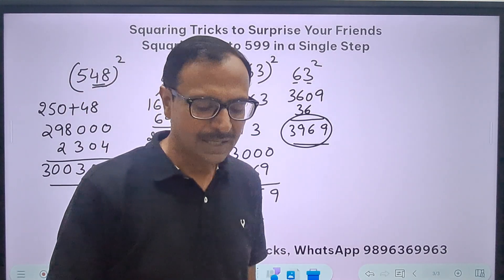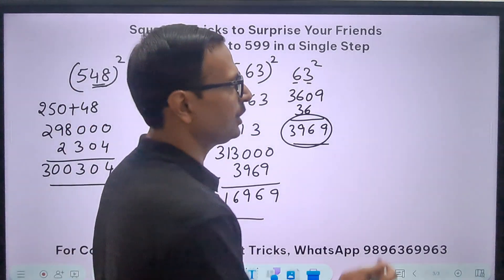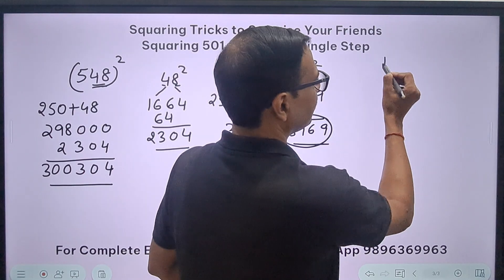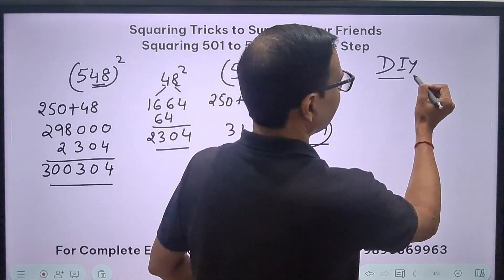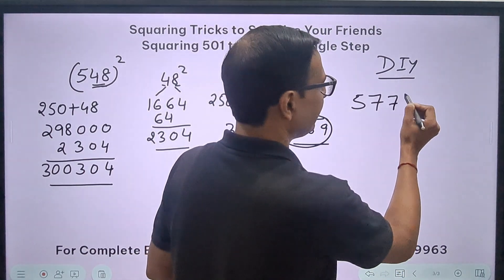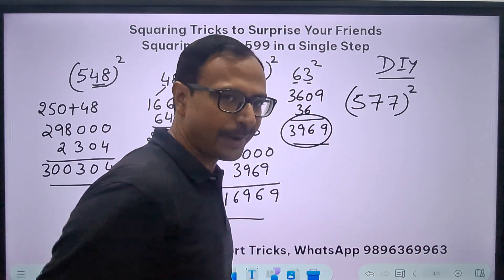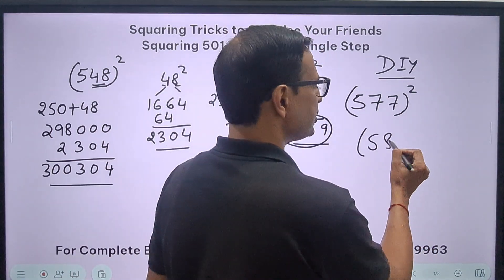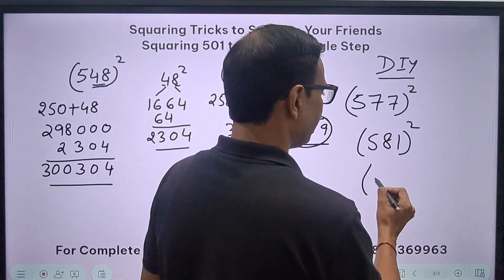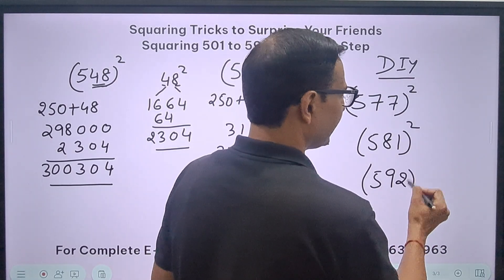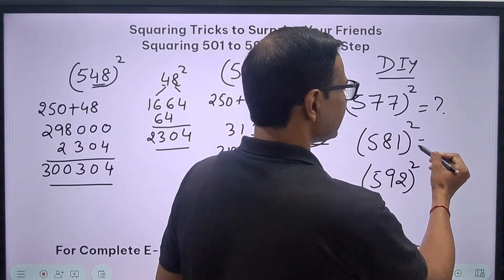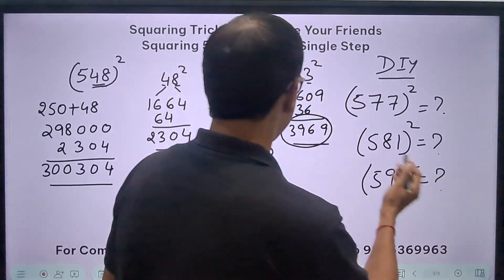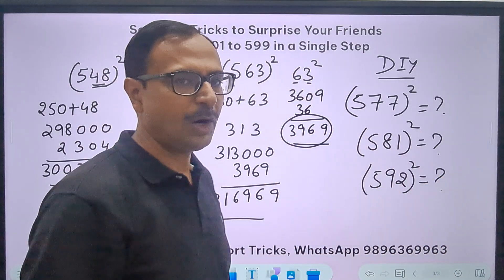You want me to do one more or should I give you some DIYs? Let's give you some DIYs. Can you tell me in the chat the square of number 577 using this method? Or you can do 581 square, 592 square. I'll give you three questions. Tell me what is the square of these numbers you obtained through this method and how much time did you take to get your answer.